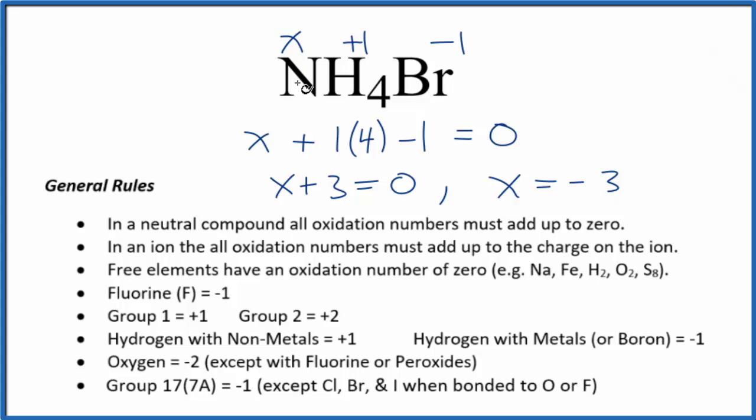So the oxidation number on the N in NH4Br, that's going to be minus three. We have minus three plus four minus one, that equals zero. This is Dr. B with the oxidation numbers for each element in ammonium bromide. Thanks for watching.